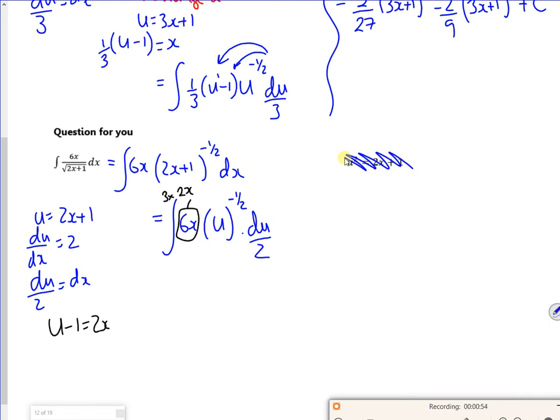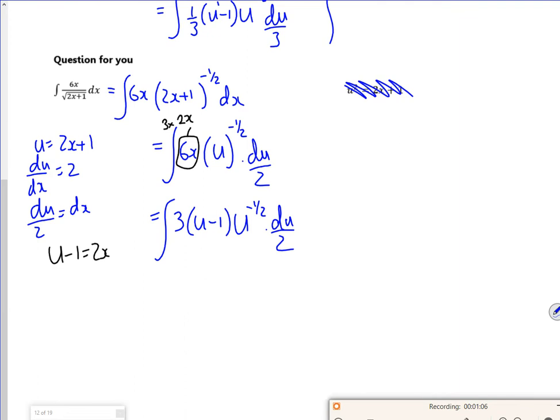It's in credible to u. So if I do it as 3 times u minus 1, times by u to the minus 1 half, du over 2. So I'll just replace that 6x, part of it is 3 times 2x. I'll tidy it up, expand my bracket.